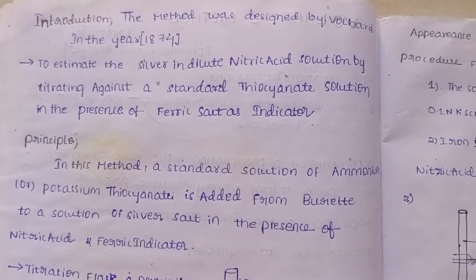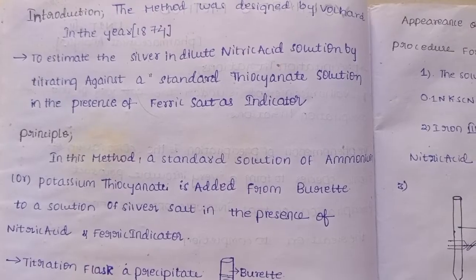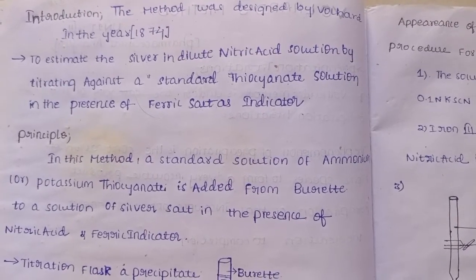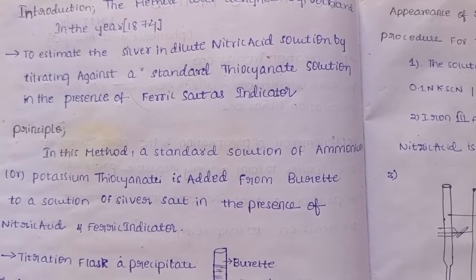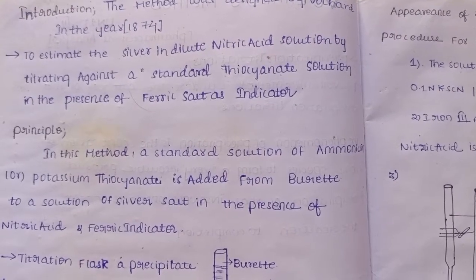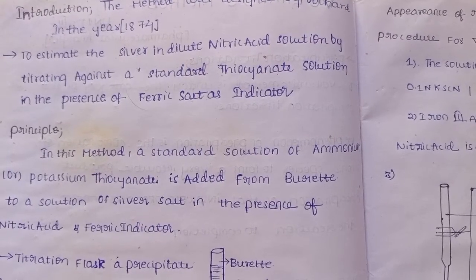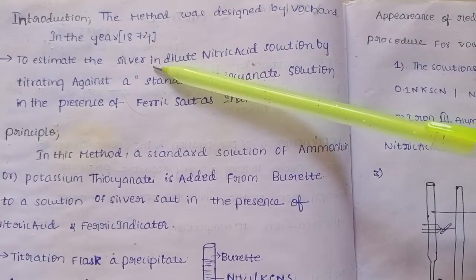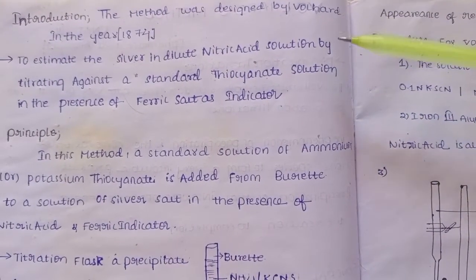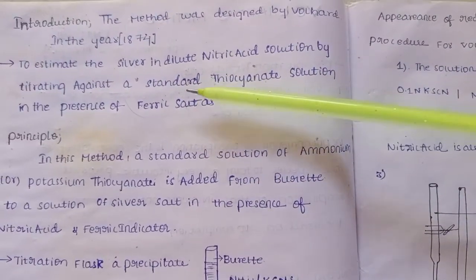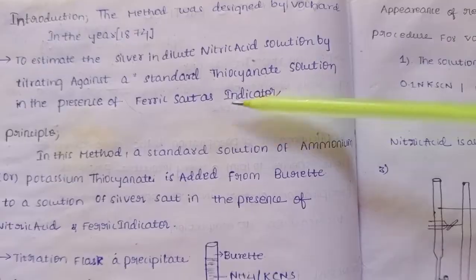The method was designed by Volhard in the year 1874. It has been used for centuries. The purpose is to estimate silver in dilute nitric acid solution by titrating against a standard thiocyanate solution in the presence of ferric salts as indicator.